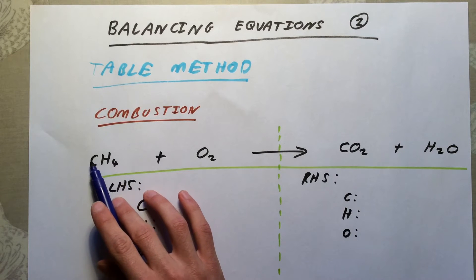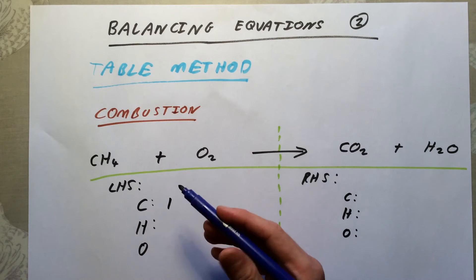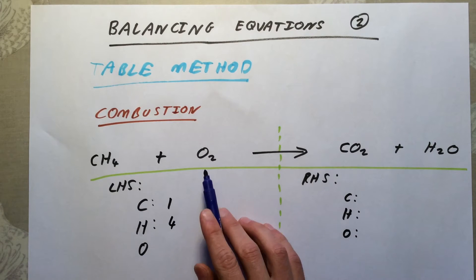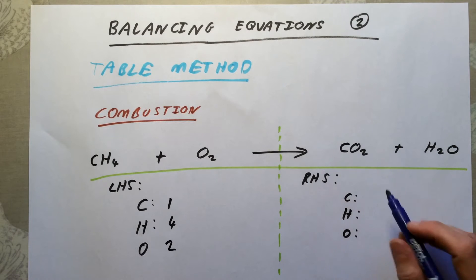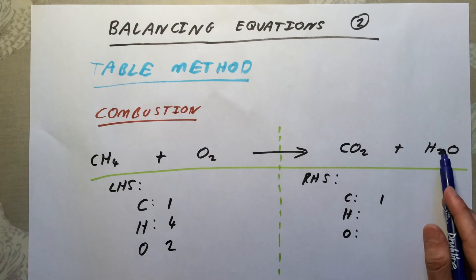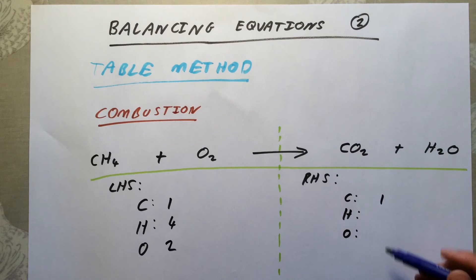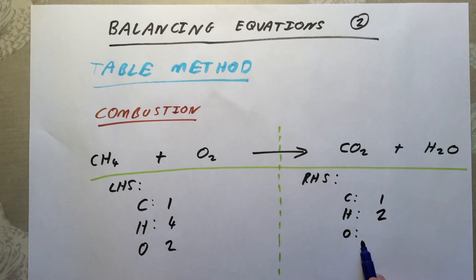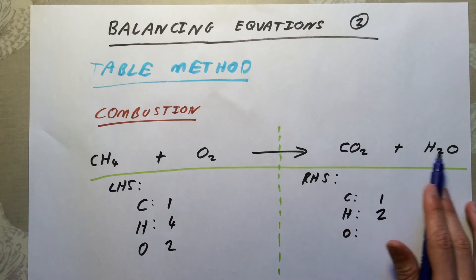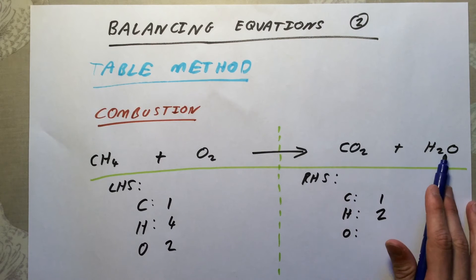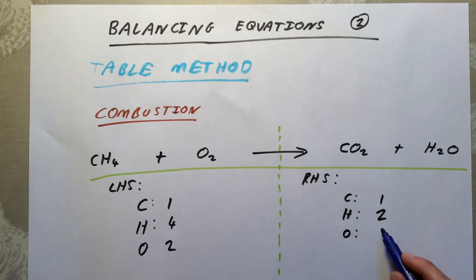Up here I've got CH4: I've got one carbon atom, and it's bonded or attached to four hydrogen atoms. I've also got two oxygen atoms on the left-hand side of my equation. On the right-hand side, I've got one carbon again. For hydrogen, make sure you look for all the hydrogens - I've got two hydrogens. For oxygens, you must really take care here. In these combustion reactions, you actually have oxygens in two different compounds: CO2 and H2O. So at the moment I've got three atoms of oxygen.